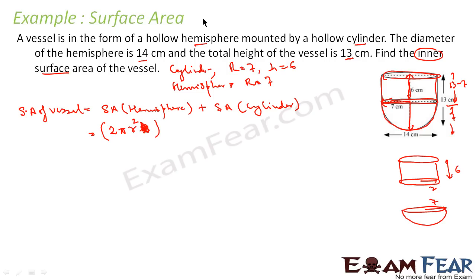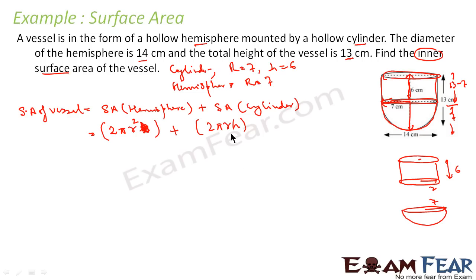Surface area of the hemisphere is 2πr², and the surface area of the cylinder (lateral) is 2πrh. This is easy to remember: 2πr is the circumference of the circle; extend it by height h and you get 2πrh as the lateral surface area of the cylinder.